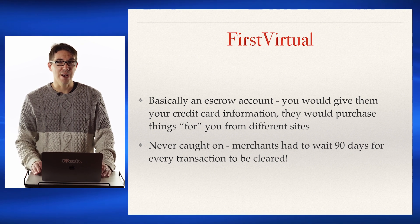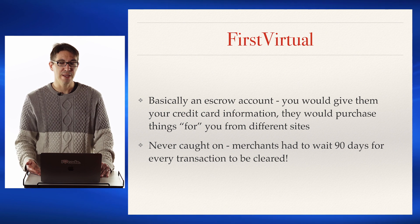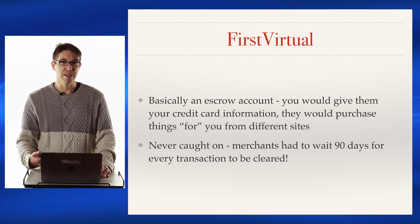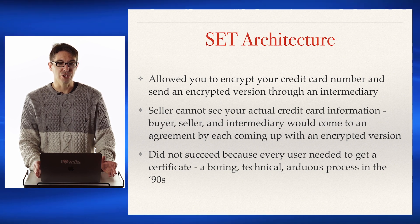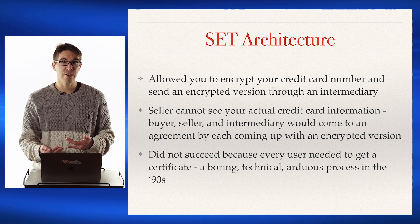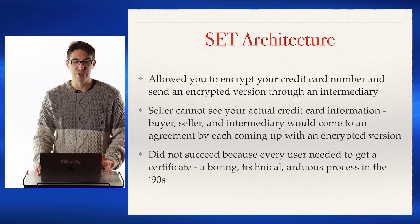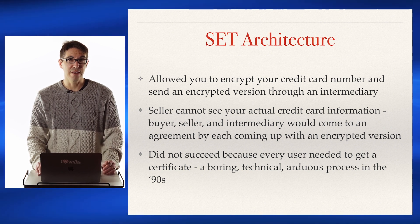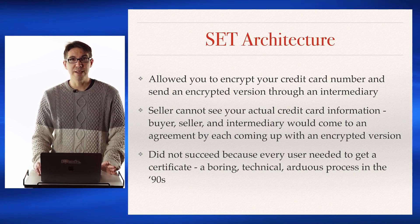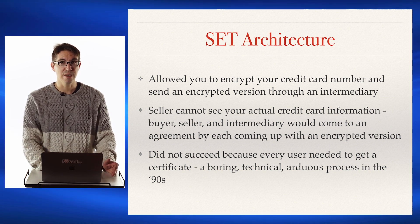However, this didn't stop people from trying. First was First Virtual — you would give your credit card information to the First Virtual Company and they would purchase things for you on different sites. This turned out to be rather problematic, especially because merchants had to wait 90 days for every transaction to be cleared. A broader system called the SET Architecture would actually allow you to encrypt your credit card number individually and send an encrypted version through an intermediary, so the seller would never see your credit card information. However, this didn't succeed because getting a crypto certificate in the 90s was a very boring and technically difficult process.